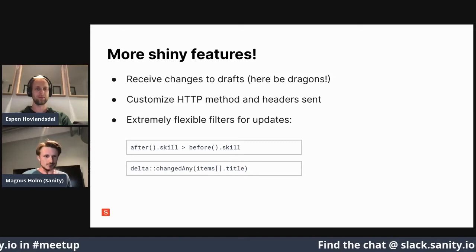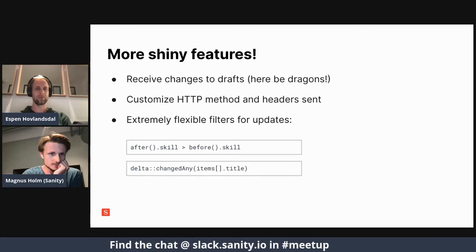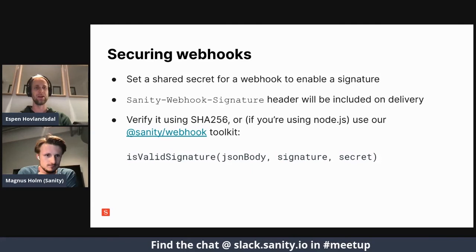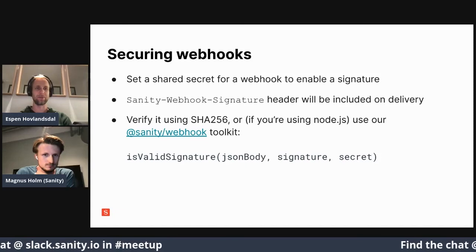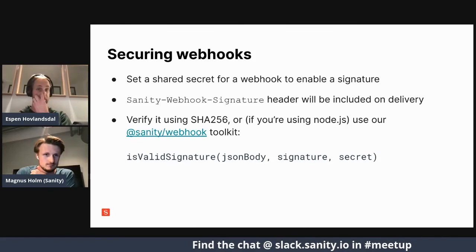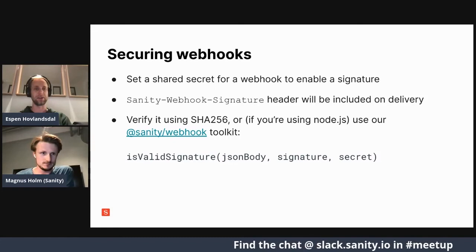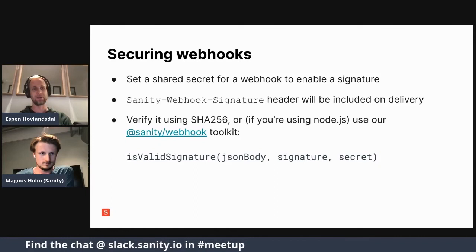We also have security built in now. You can set a shared secret for a webhook to enable it to send a signature, included in the HTTP headers delivered to your configured endpoint using the Sanity webhook signature header. You can verify that using SHA-256 hash, or if you're using Node.js, we have a toolkit called 'sanity-webhook' which has helper methods like 'isValidSignature' and middlewares for Express, making it really easy to verify that requests are coming from Sanity using the secret you configured.